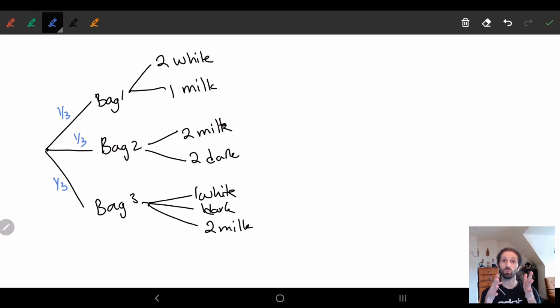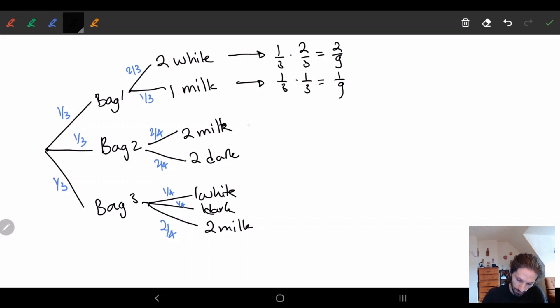So inside of bag one, I have two white chocolates and one milk chocolate. That means I'm going to have a 2/3 chance of choosing the white one and then a 1/3 chance of choosing the milk one. In bag two, I have a 2/4 chance of choosing a milk one - two out of four total options - and then 2/4 for the dark. And then you can see I'll get the same thing for this last one: 1/4, 1/4, and 2/4. So the probability to get any particular one of these: the probability to get one of these white chocolates is 1/3 times 2/3, which equals 2/9. This one will give me 1/3 times 1/3, which is 1/9.